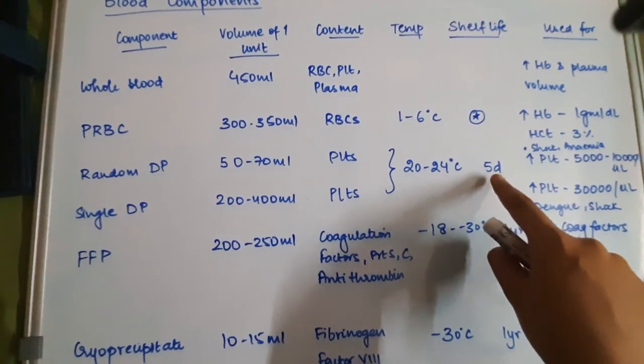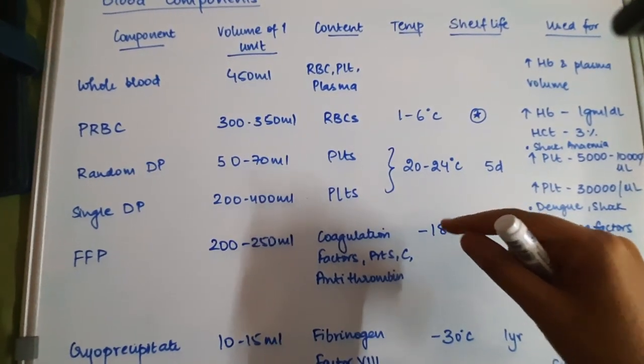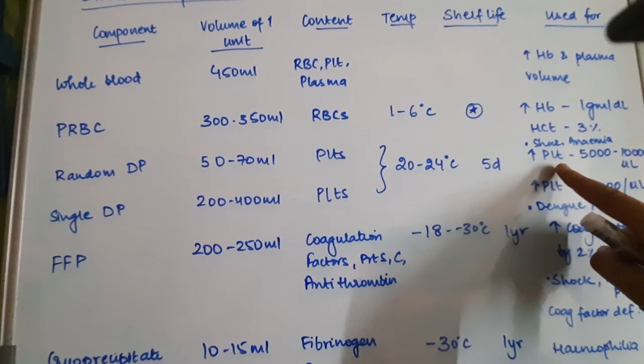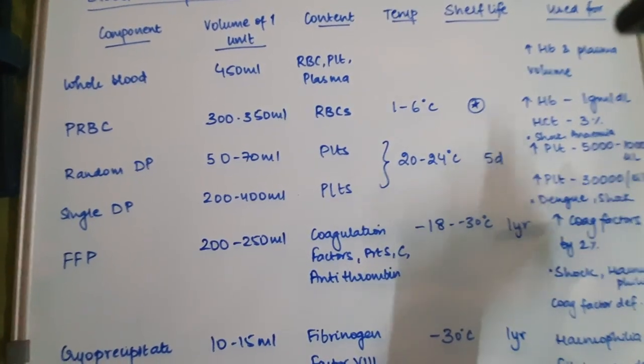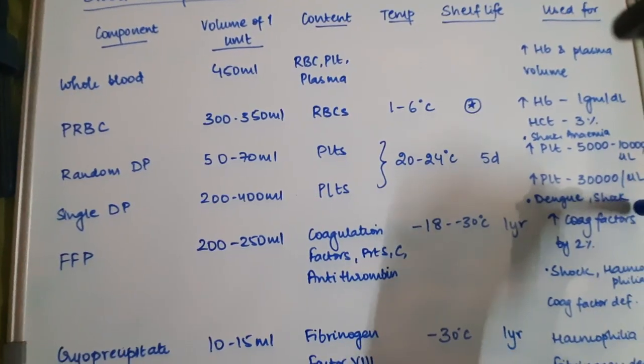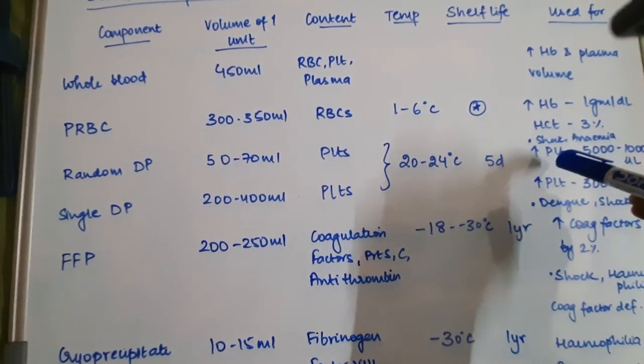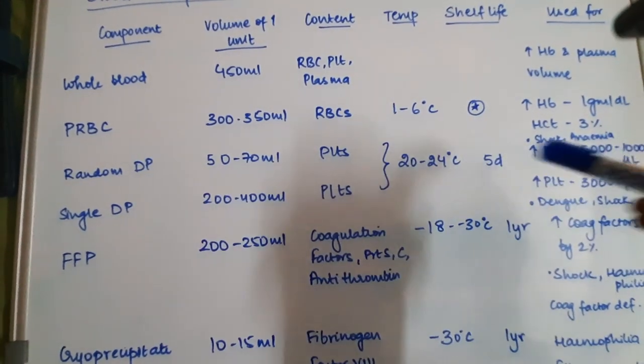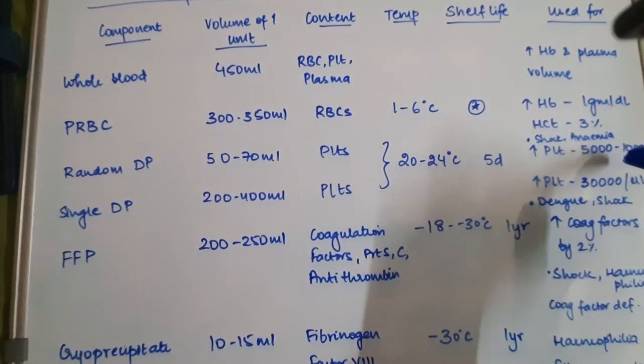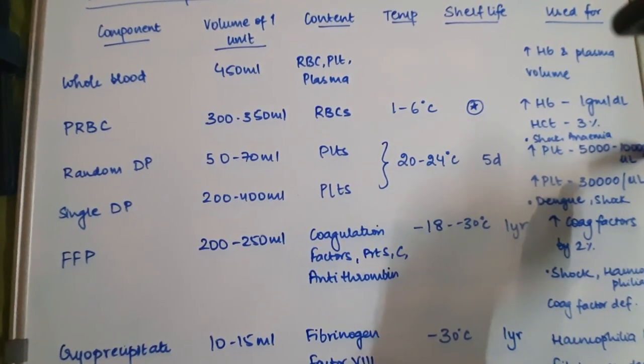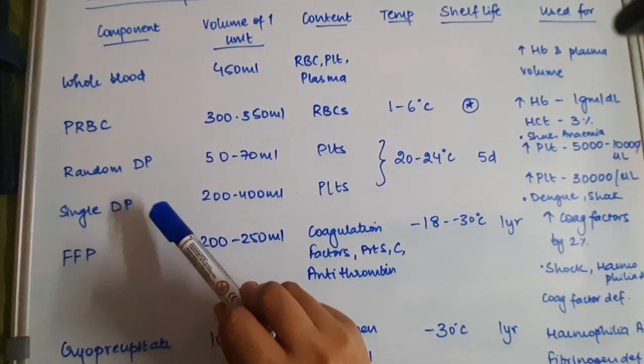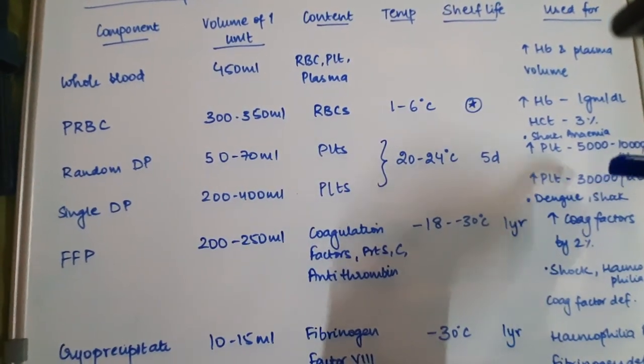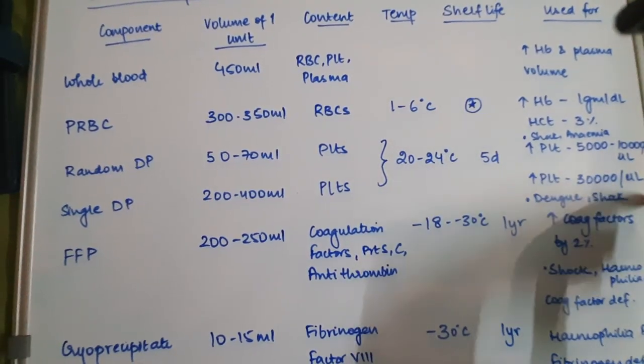It is used for dengue and shock conditions like severe dengue. One packet of random donor platelets will increase platelets by 5,000 to 10,000 per microliter of blood, and one packet of single donor platelets will increase platelets by 30,000 per microliter of blood.